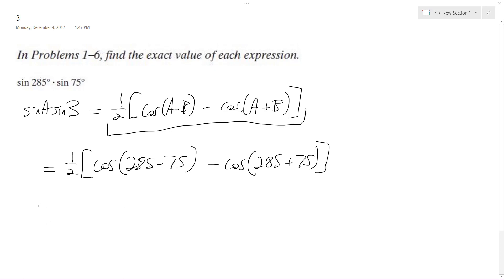This gives us one-half of cosine 210 degrees minus cosine 360 degrees.